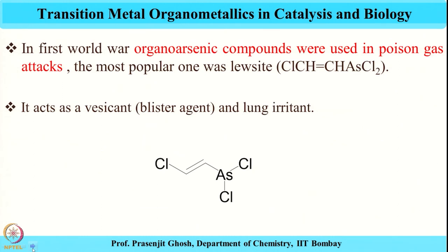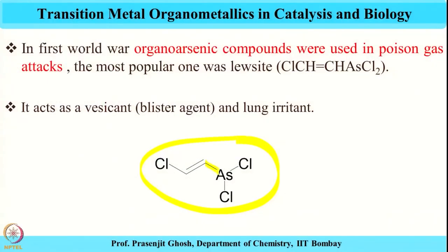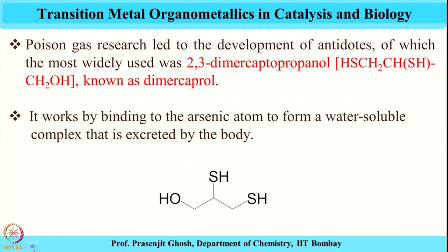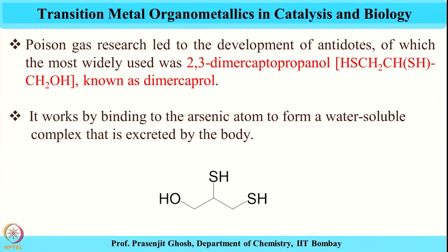Moving to another arsenic organometallic compound — this one contains an arsenic-carbon bond but was used for negative purposes, as a poison gas in World War I. These are lung irritants that cause blister formation. As a remedy, an antidote containing dithiol ligands was developed to provide relief from this arsenic poison gas.